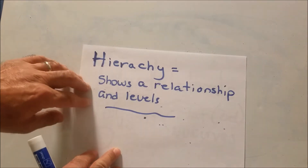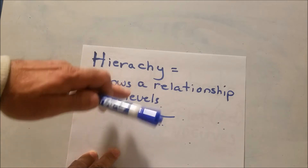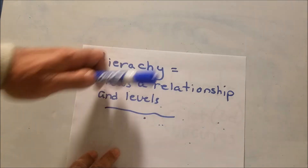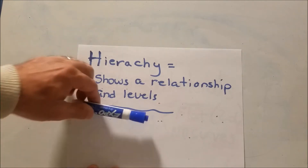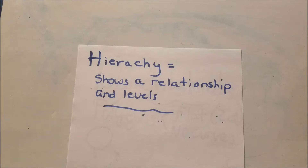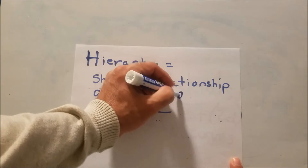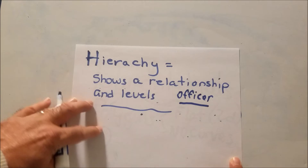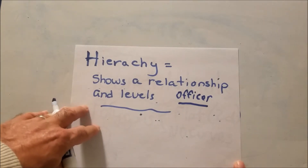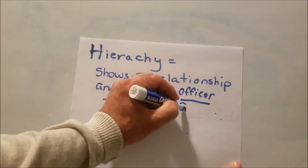Before we look at quadrilaterals, let's talk about hierarchy. A hierarchy shows a relationship between things in a certain order, where one is higher than the other. Think of the army: you can be an officer or an enlisted person. A sergeant is not an officer, but the highest officer in the army is a general.